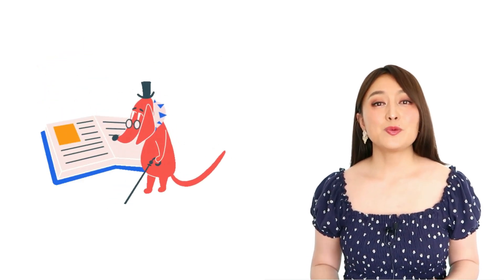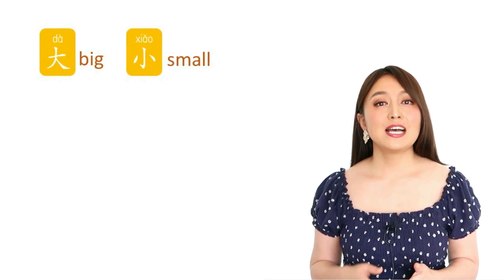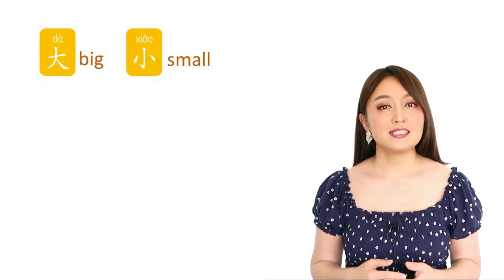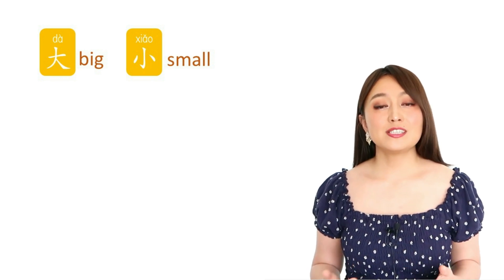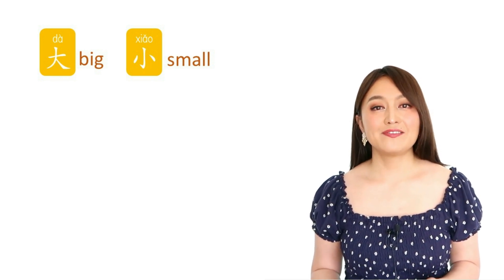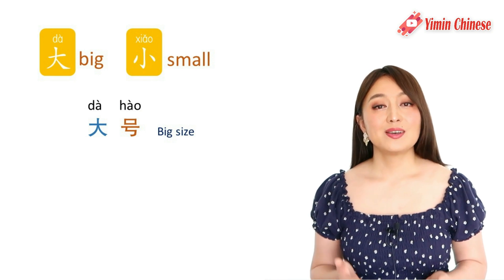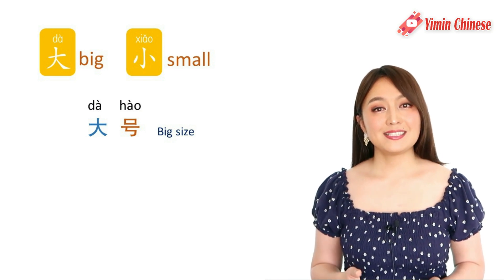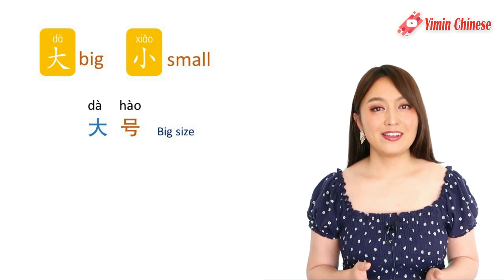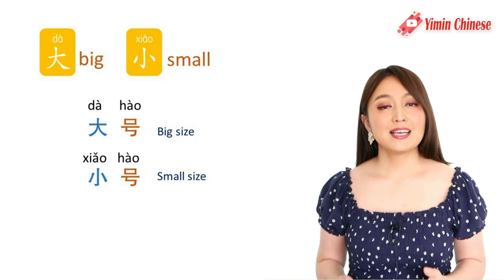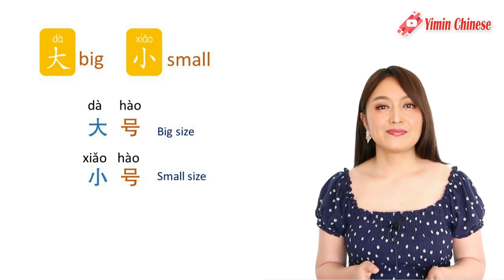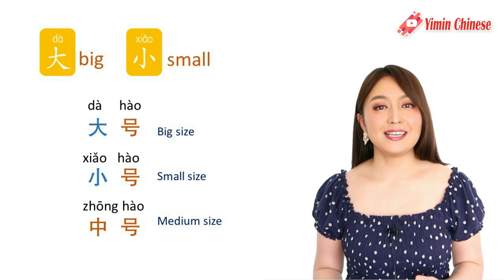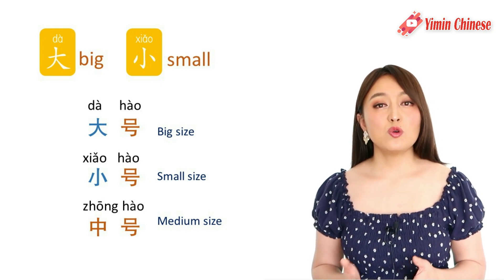我们从最简单的开始. Let's start with the easiest ones. First we have 大 and 小 — big and small. For the size of clothes we have 大号 (big size), 小号 (small size).